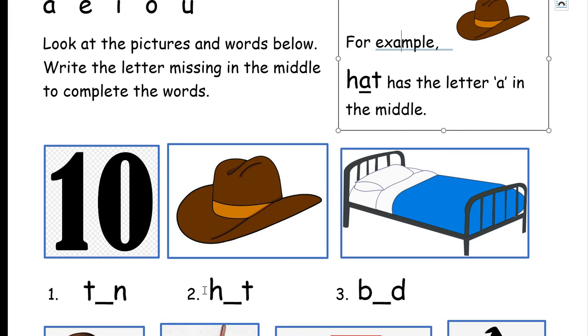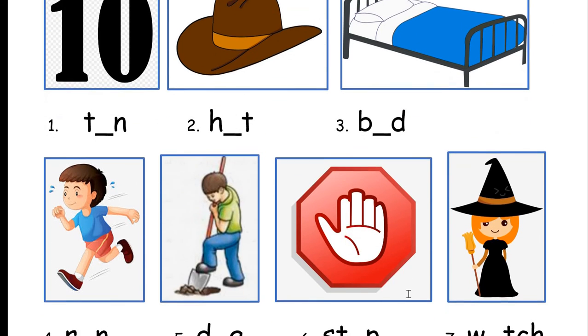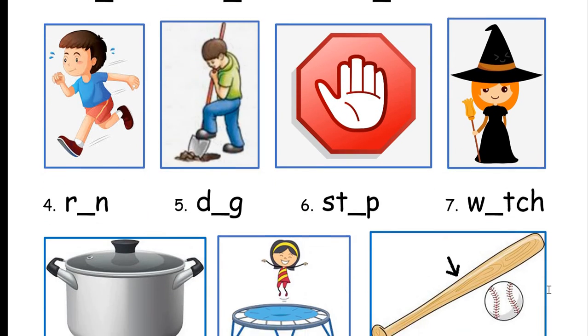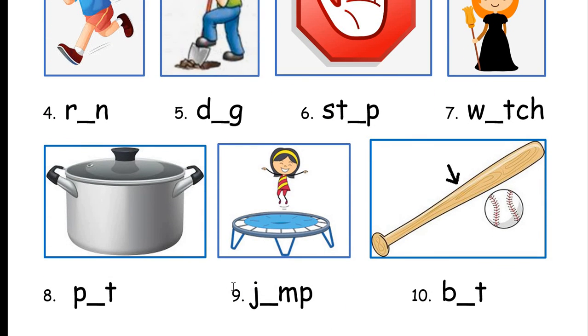Number one, ten. Number two, hat. Number three, bed. Number four, run. Number five, dig. Number six, stop. Number seven, witch. Number eight, pot. Number nine, jump. And number ten, bat. Bat. This is a bat that you would use in a game like baseball or cricket. Okay, a game you use in a sport to hit a ball. A bat.